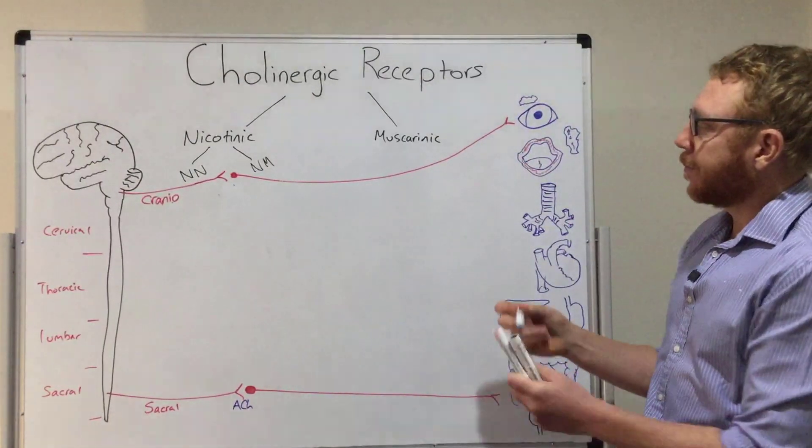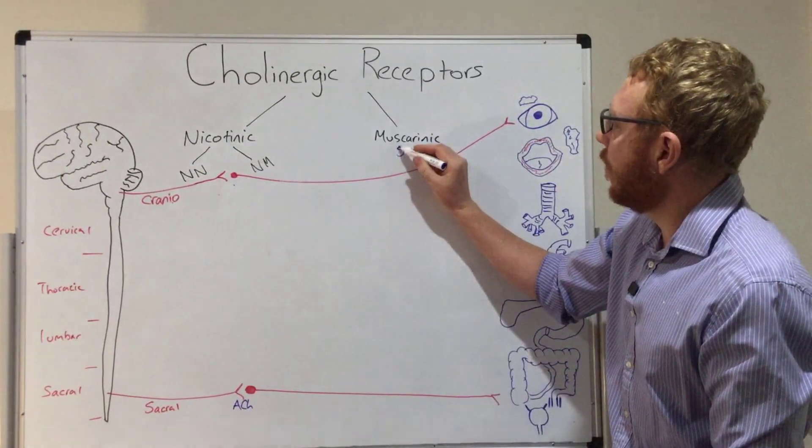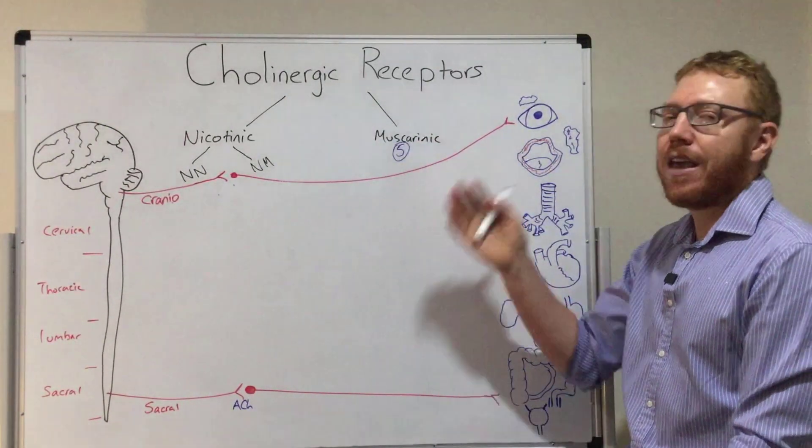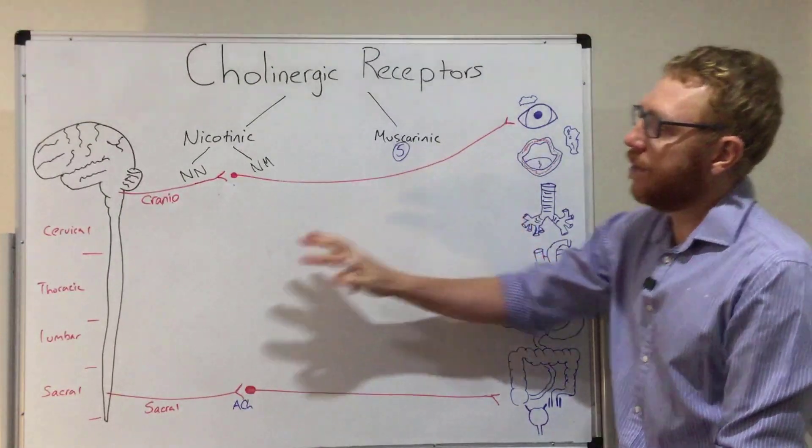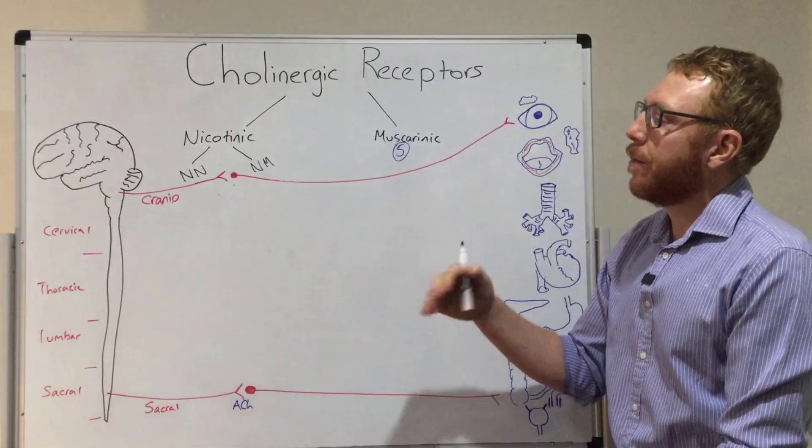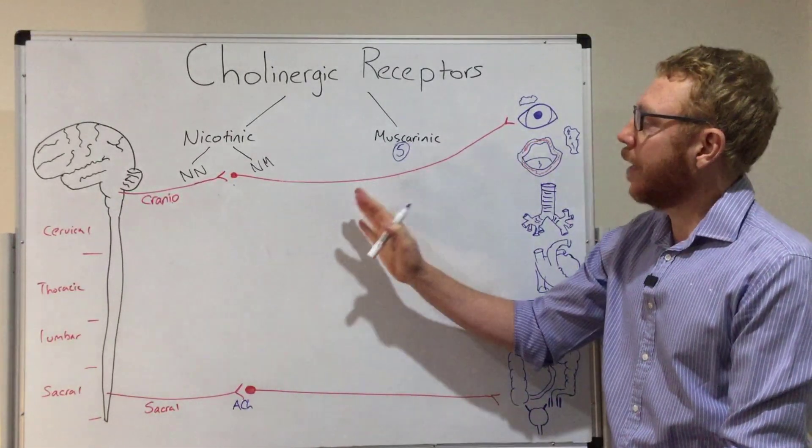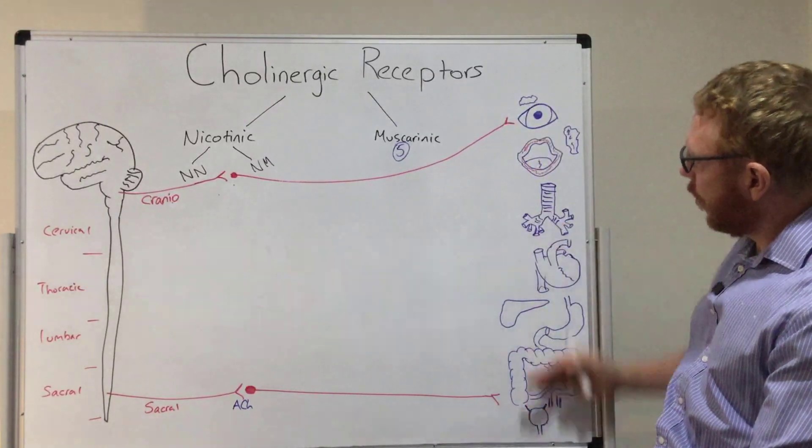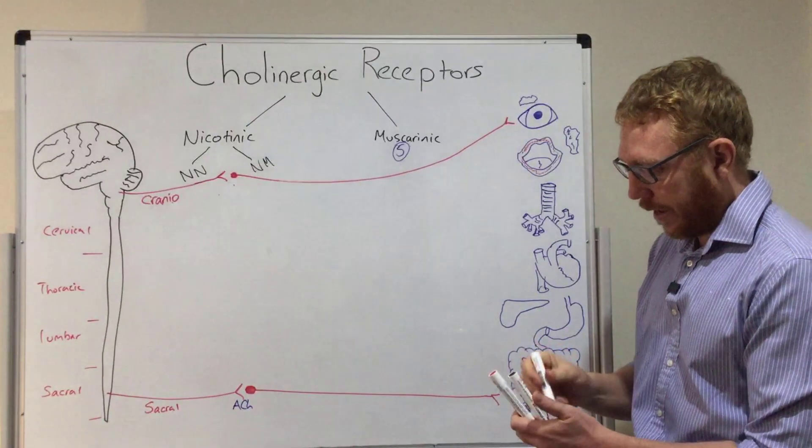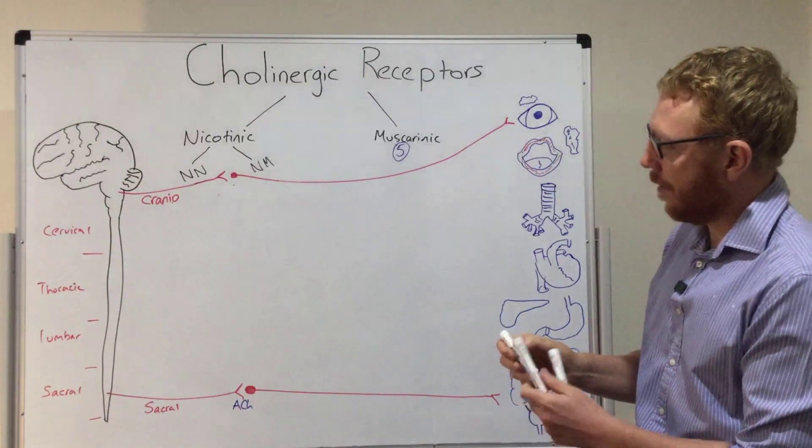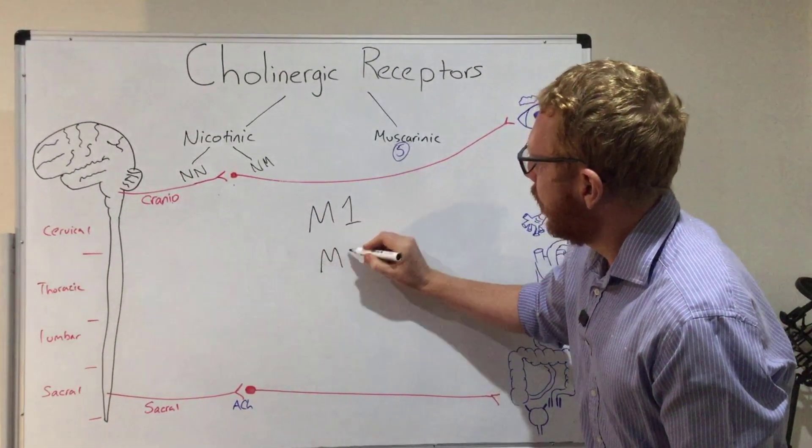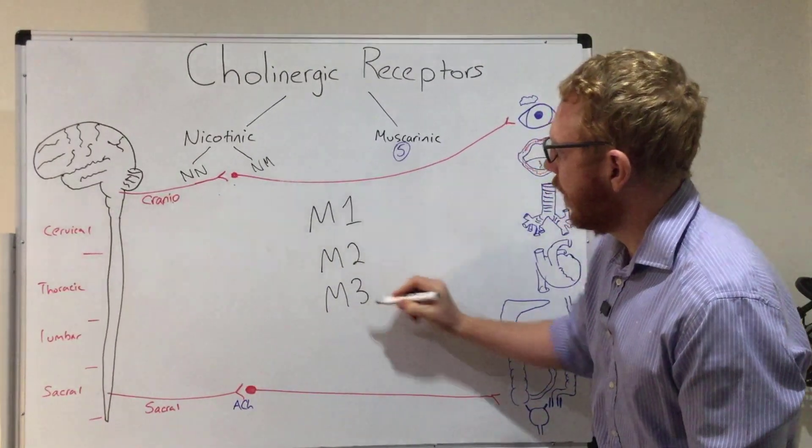For the muscarinic, there are five types - M1, M2, M3, M4, M5. Now M4 and M5 specifically focus on receptors in the brain. We're not going to really go through those today because most of the pharmacology relates to M1, M2, M3 and most of these organs that we see down the side here relate to M1, M2, M3. So we're going to discard M4 and M5 today. So let's put M1, M2 and M3 here.